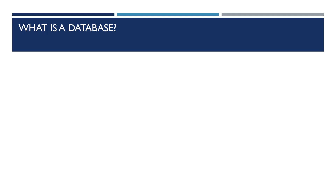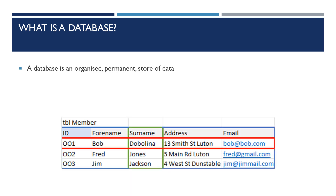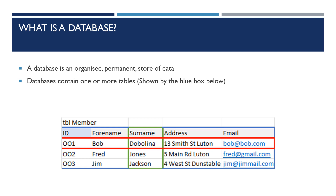So what is a database? A database is an organized permanent store of data. Databases contain one or more tables. Below you can see just a single table surrounded by the entire blue box. All of this data represents the member table.